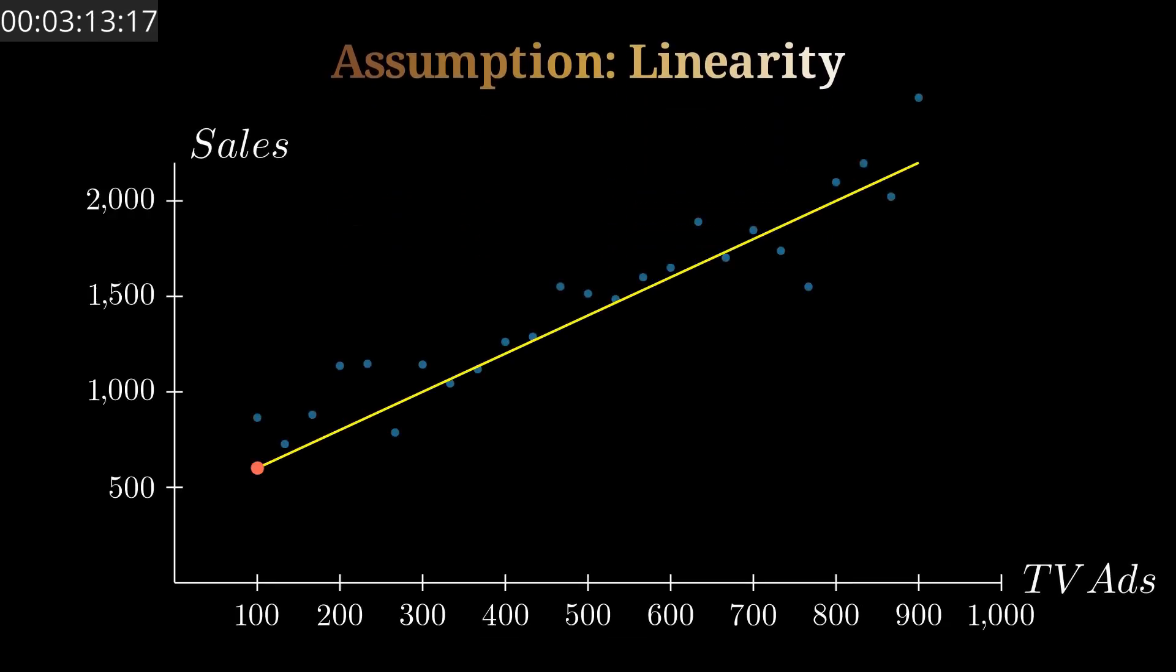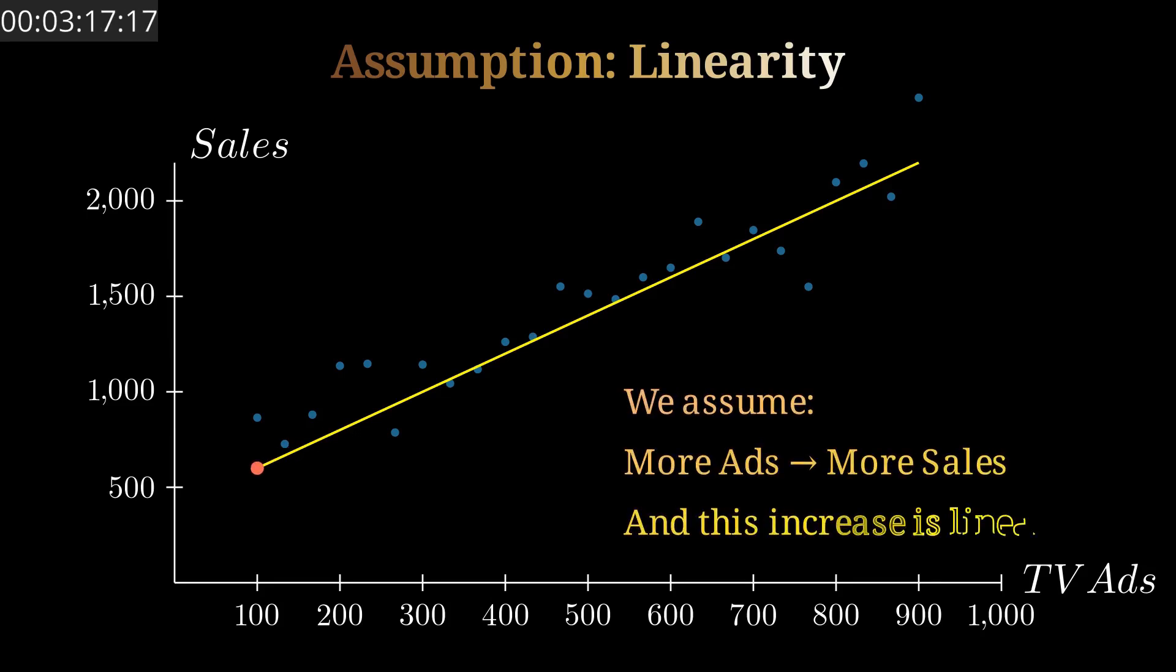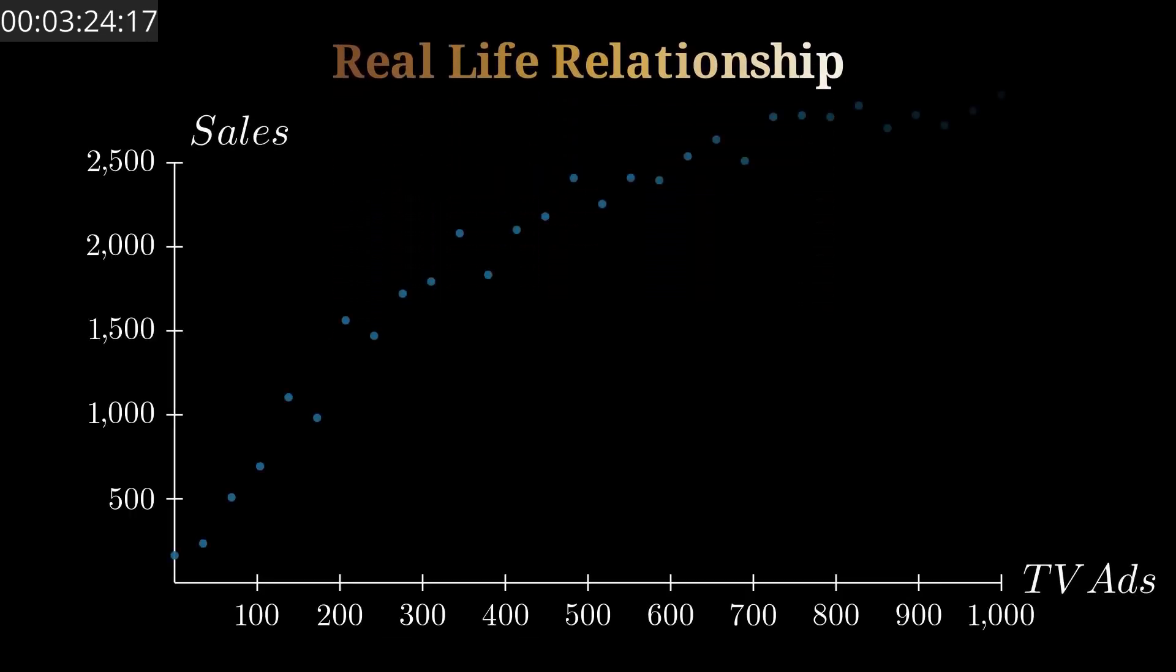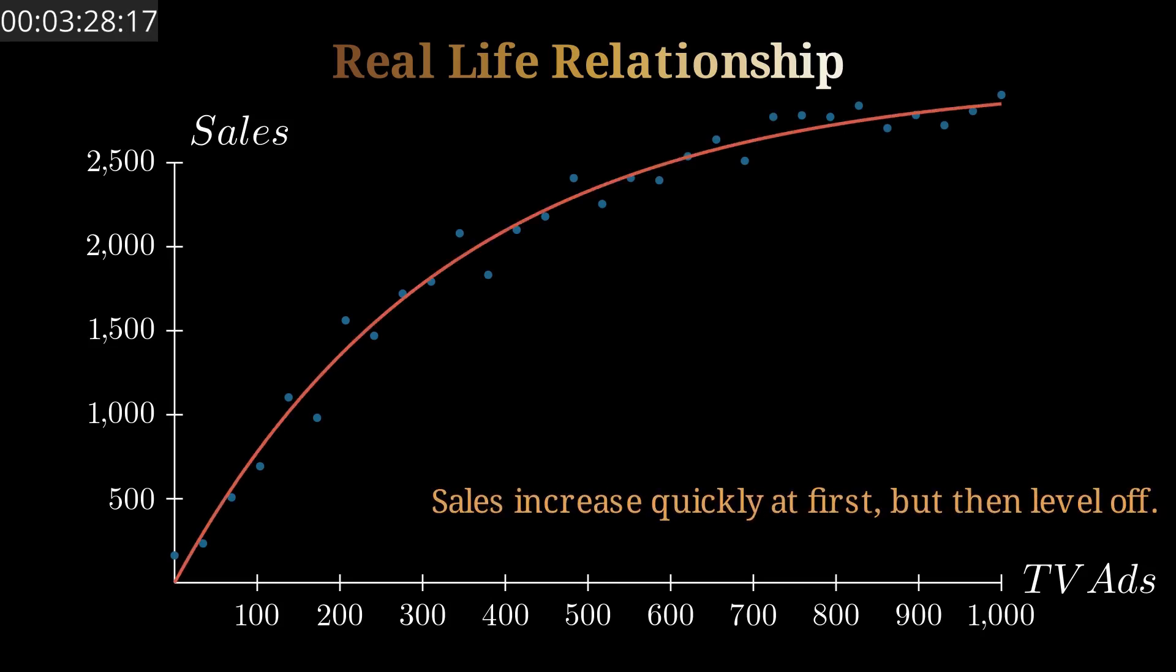So it's like the sales have a linear relationship with the money spent on ads. The more we increase the money spent on ads, the more sales we get. In real life, it's so unusual to have such a linear relationship between a response and predictor. So before jumping into fitting a model, it's crucial to analyze the data and study if the response is closer to being linear or not.